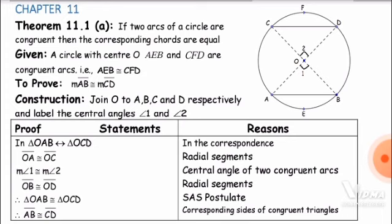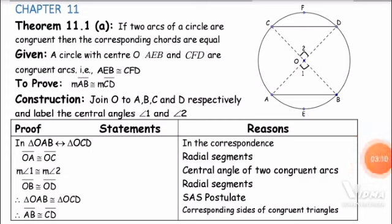Next, we check that angle 1 (at center for arc AEB) is congruent to angle 2 (at center for arc CFD). The reason is: central angles of two congruent arcs are always equal. If the arcs of a circle are equal, the angles subtended at the center are equal. So angle 1 is congruent to angle 2 because the arcs are congruent.